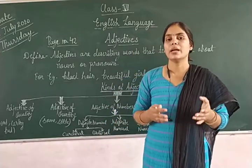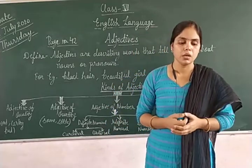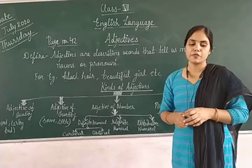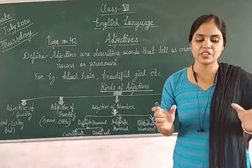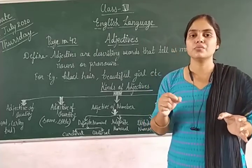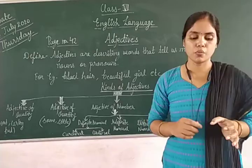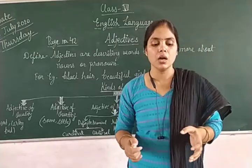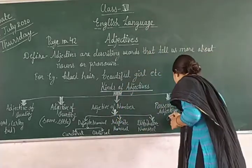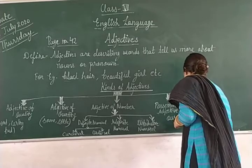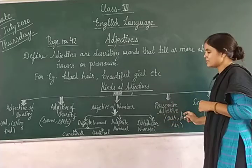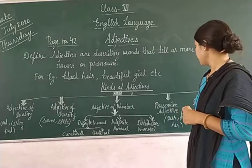These are your adjectives of number. Now move on to possessive adjectives — in possessive adjectives we show possession or ownership. Examples of possessive adjectives are: our, his, her.